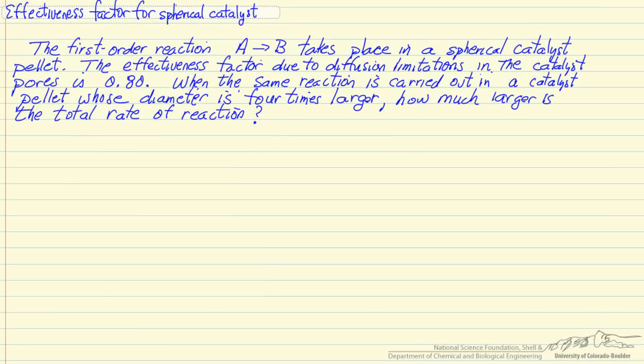In this example, I'm going to look at a first-order catalytic reaction that takes place in a catalyst sphere, and we're given an effectiveness factor of 0.8, which means the rate is 80% of the rate we would obtain if the concentration everywhere in the catalyst was the same as at the external surface. We want to now take and make the same catalytic material into a larger catalyst sphere and determine how much more the rate increases if we increase the diameter by a factor of 4.